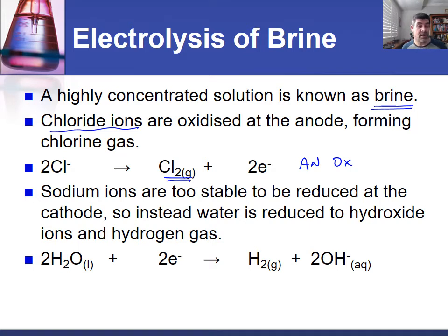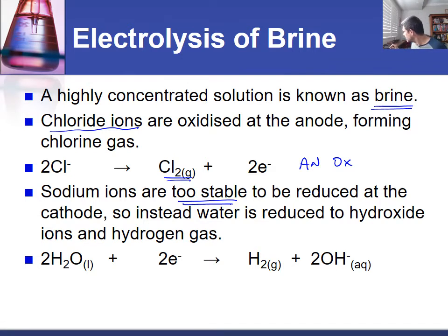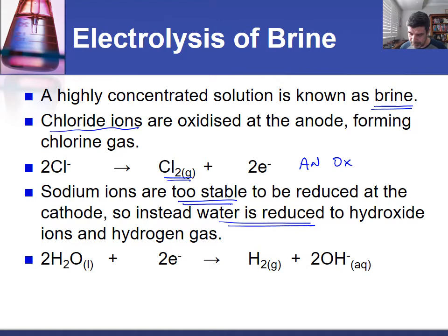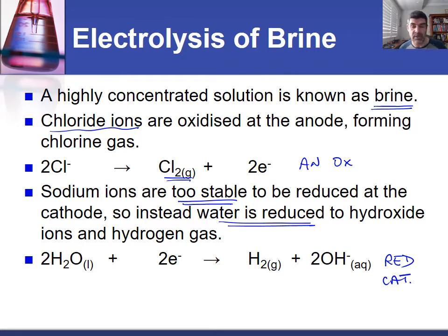Sodium ions are what we'd want to reduce to form sodium metal, but the problem is that sodium ions are too stable. The sodium metal itself is extremely reactive and therefore preferentially exists as sodium ions. As a consequence of that, most often when we're looking at electrolysis we're looking at the reduction of water to hydroxide ions and hydrogen gas. So this is the equation for the reduction at the cathode — water gaining electrons to form hydrogen gas and hydroxide ions.